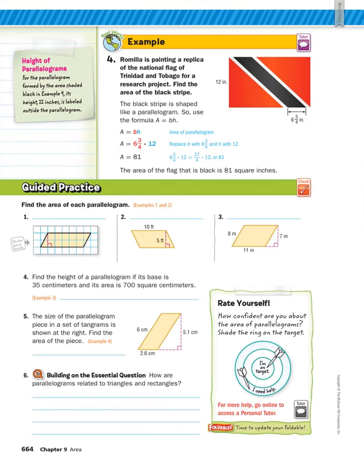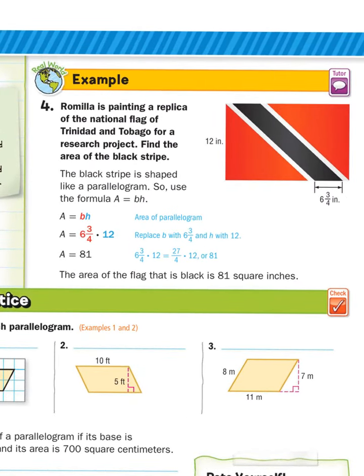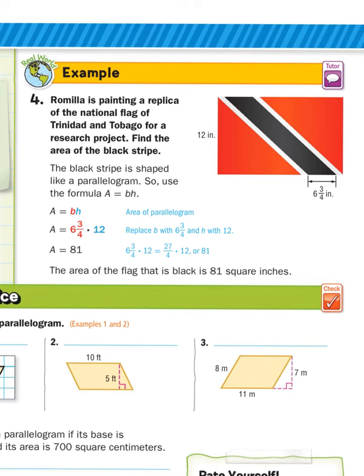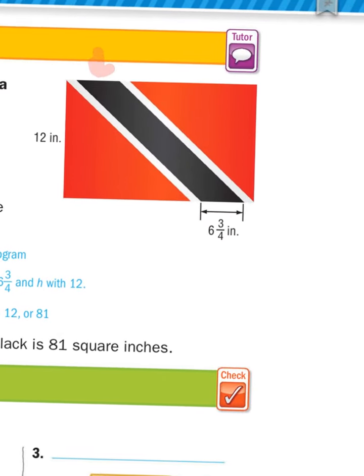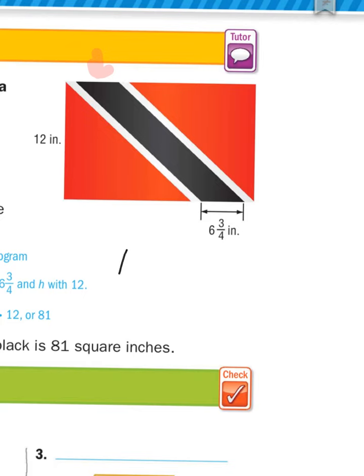All right. Last to show you is all that fun stuff in a real world problem. So we have a pretty cool flag there. So let's read the problem. It says Romila is painting a replica of the national flag of Trinidad and Tobago for a research project. Find the area of the black stripe. So we only need the area of the black stripe here. And it says find the area, so that means it can't be a missing dimension. So I'm going to start with the formula.